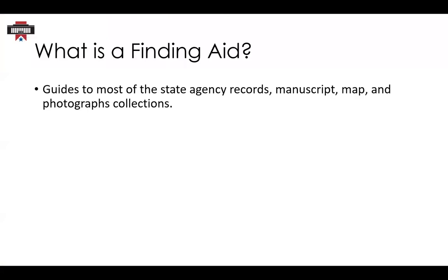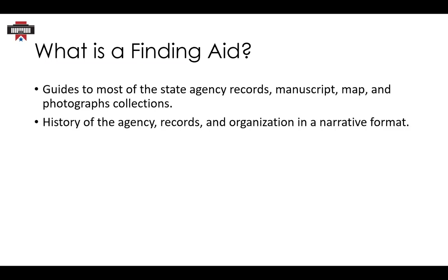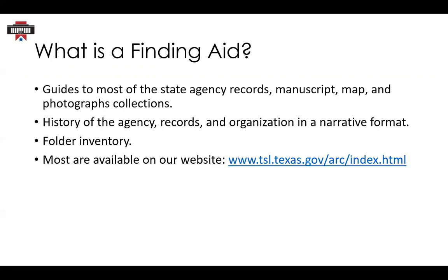A key to finding materials in the State Archives are finding aids, which can also be called descriptive guides. As the name implies, they describe state agency records, manuscripts, maps, photographs, and other types of archival materials. Finding aids provide a narrative of the agency history, the records, and their organization. This can help you learn about related agencies and other record types that might be useful to your research. A finding aid's folder inventory helps you identify which box to have pulled, and most of our finding aids are available online through our website.